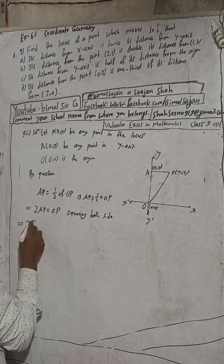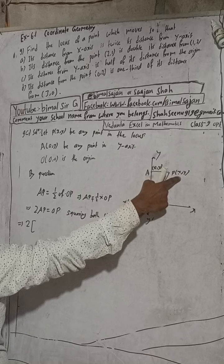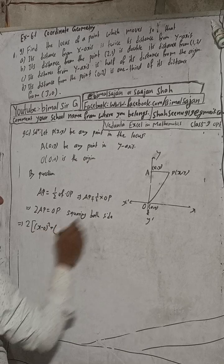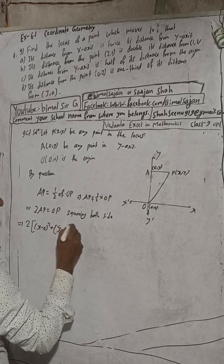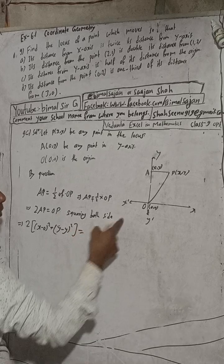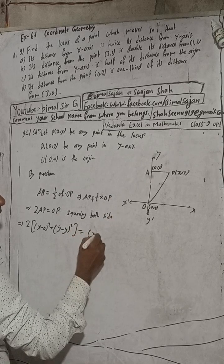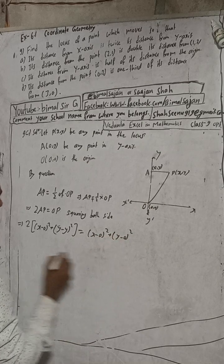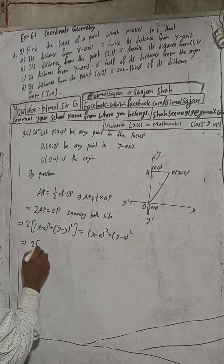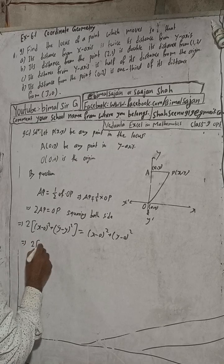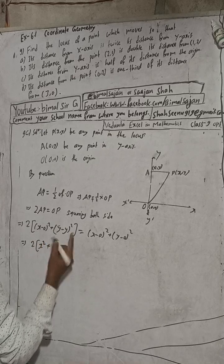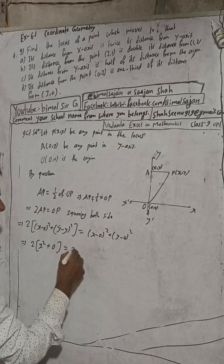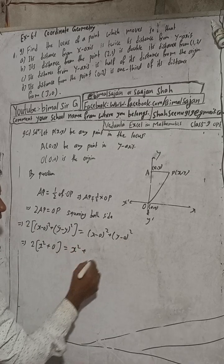Using the distance formula: AP distance gives (x − 0)² + (y − y)² = x². And OP distance gives (x − 0)² + (y − 0)² = x² + y².